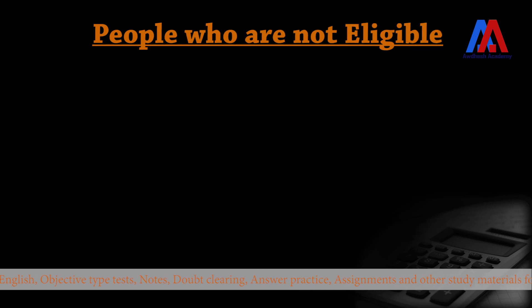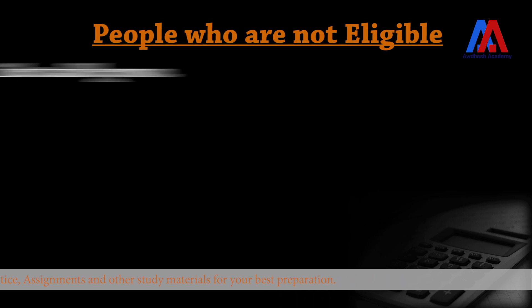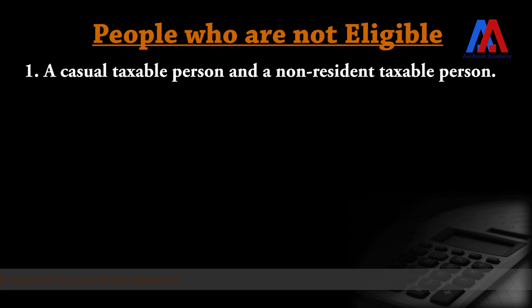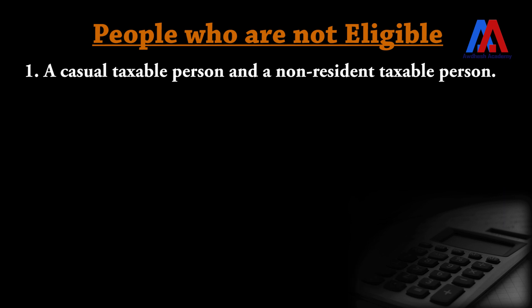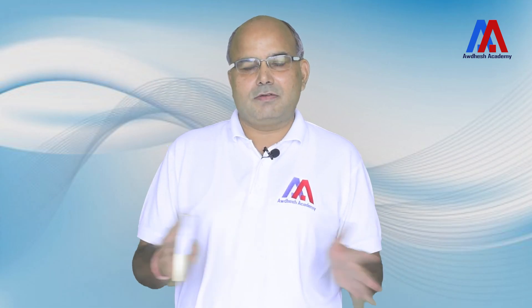There are certain categories of people who are not eligible for composition levy. There are basically 6 categories. The first is a casual taxable person or a non-resident taxable person. The second is the supplier of services other than the supplier of food and drinks. So, all other services are not covered under the composition levy.